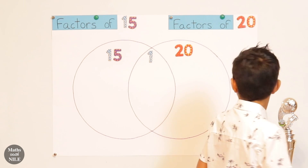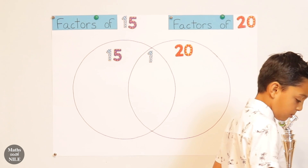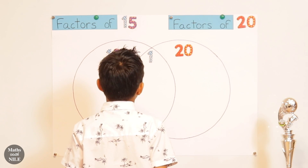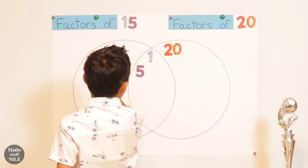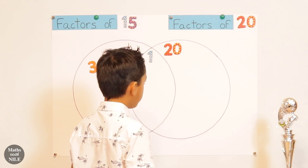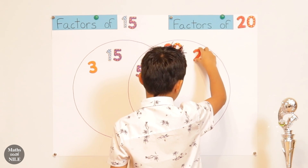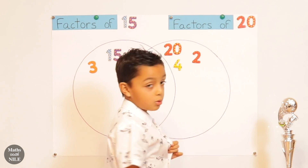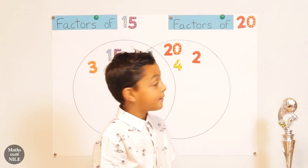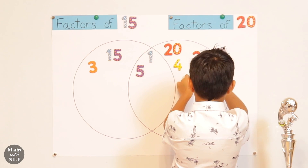So 5 can go into 15 three times. And 5 can go into 20 four times. So 5 will have to go into the middle — 5 is another common factor. 3 can go into 15 but it can't go into 20. And how many times does 5 go into 20? 4 times. So we can put 4 there. We can put 2 there, because 20 is an even number, so 2 goes into every even number. How many times does 2 go into 20? 10. So 10 would also be a factor of 20, but not of 15.